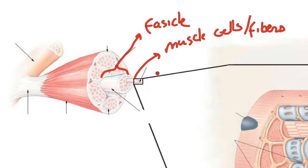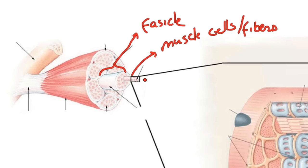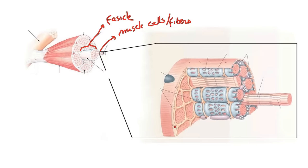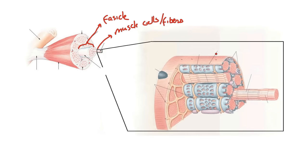What I'm going to do now is take this muscle cell and look at it much larger here. Here you can see we have the muscle cell, the muscle fiber, and that is made up of these individual myofibrils. So this would be a myofibril.